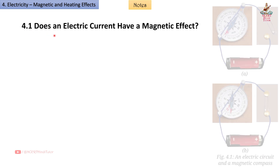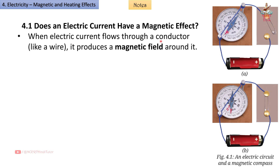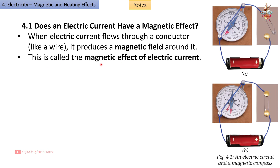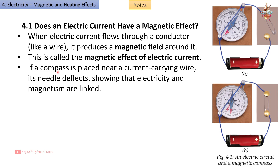4.1 Does an electric current have a magnetic effect? When electric current flows through a conductor like a wire, it produces a magnetic field around it. This is called the magnetic effect of electric current. If a compass is placed near a current-carrying wire, its needle deflects, showing that electricity and magnetism are linked.